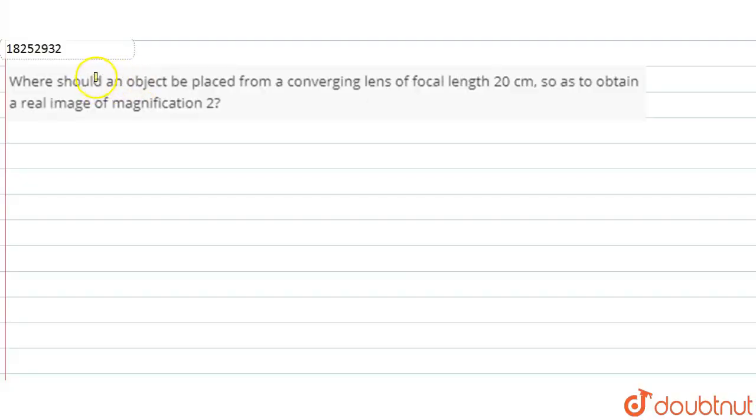So in question we have given: where should an object be placed from a converging lens of focal length 20 cm, so as to obtain a real image of magnification 2?